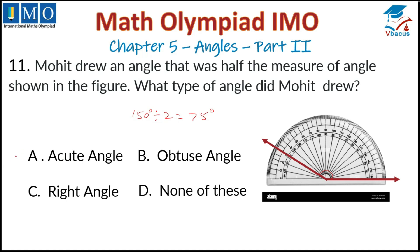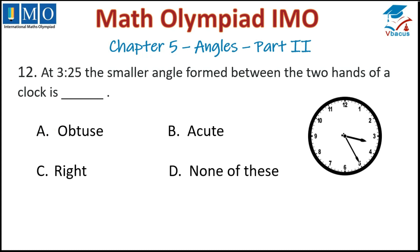Question number 12: At 3:25, what is the smaller angle formed between the two hands of a clock? The smaller hand is here and the bigger hand is here, and the smaller angle formed is an acute angle. So it forms an acute angle, which is option B. Option B is correct.